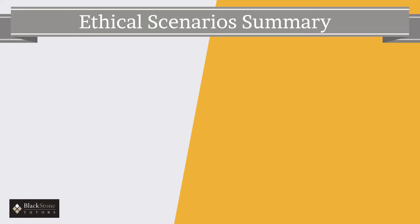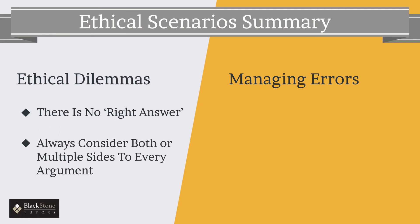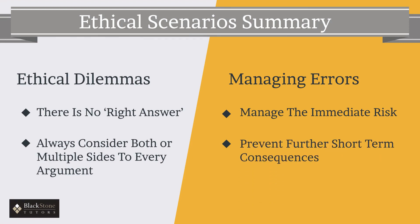To summarize, the two types of ethical scenarios are ethical dilemmas and managing errors. With all ethical dilemmas, avoid thinking that there is a single correct answer, and ensure that you always commence any answer by acknowledging both sides. When managing errors, keep in mind the three essential steps: firstly manage the immediate risk, secondly consider the additional short-term risks or consequences, and thirdly investigate and implement measures to prevent any long-term recurrences.